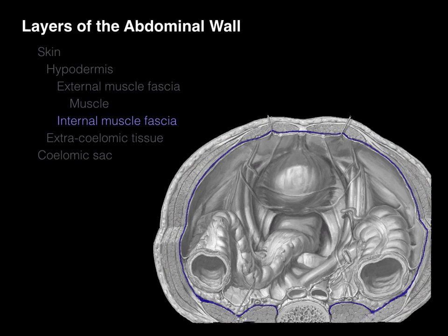The inside lining of those muscles is the internal muscle fascia, also dense connective tissue. The primary anatomical name for this fascia is the transversalis fascia, deep to the transversus abdominis muscle. It is continuous with fascia over the quadratus lumborum, called quadratus lumborum fascia; over the psoas major, called psoas fascia; and it blends with the periosteum of the anterior longitudinal ligament of the vertebral bodies. All of these, regardless of location, belong to the same internal muscle fascial layer.